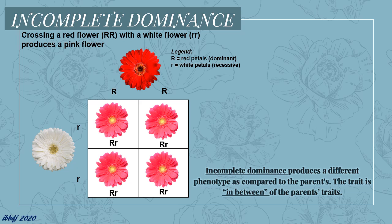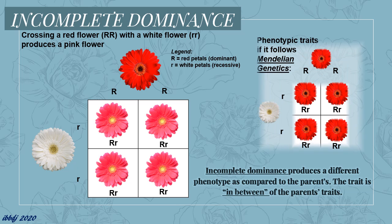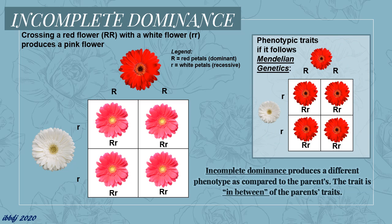First, let's start with an example on incomplete dominance. In this example, we have red flower as the dominant trait and white flower as the recessive trait. This cross produced a pink flower, a unique phenotype that is somehow in between red and white. If we follow the Mendelian laws, a heterozygous genotype would ultimately express the dominant trait, red. However, this is not the case in this example.